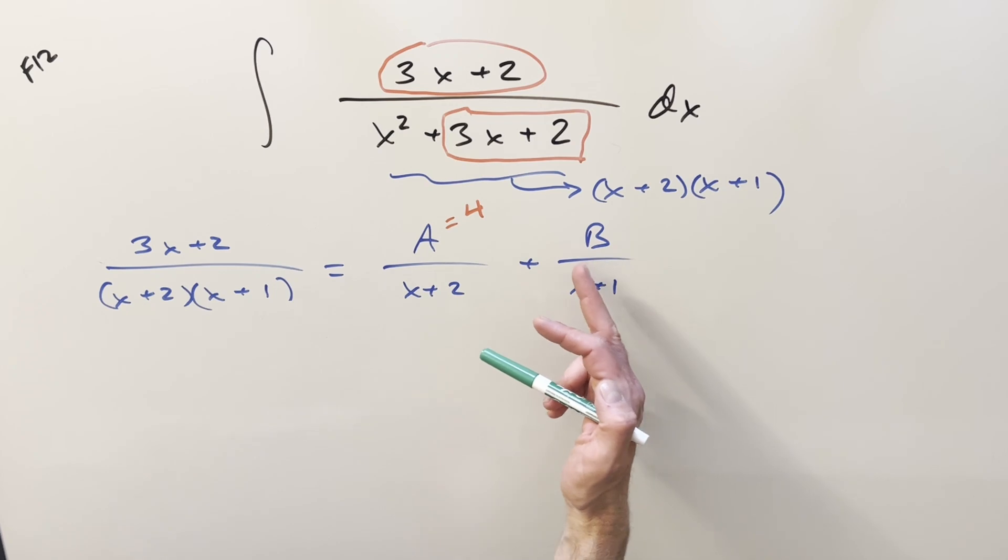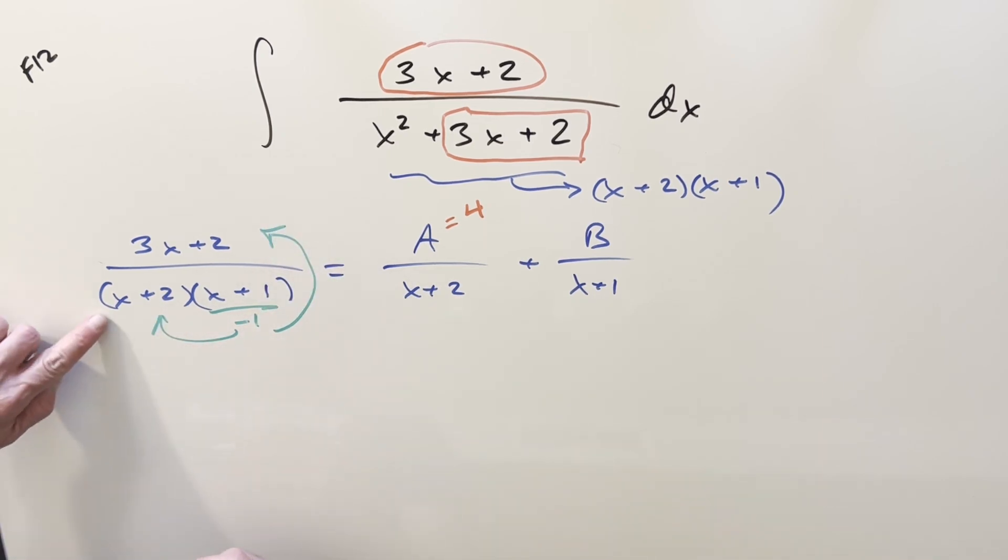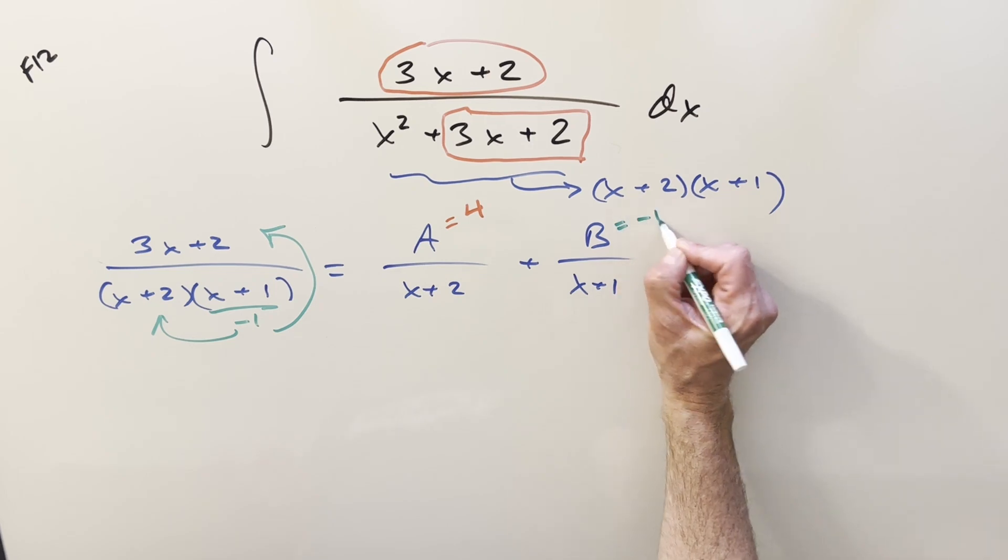Doing the same kind of thing to get our B coefficient, we plug in minus 1 here, that's going to be a zero, so we cover it up and plug it in everywhere else. When we do that over here, that's just going to be a 1, so we just need to plug minus 1 in here. Minus 3 plus 2, that's a minus 1, so our B value is going to be minus 1.